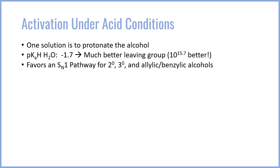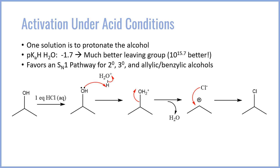This tends to favor an SN1 pathway for secondary, tertiary, and allylic or benzylic alcohols — situations where you would form a moderately stable cation. For example, consider isopropanol reacted with one equivalent of HCl in aqueous conditions. The OH lone pair steals a proton from the hydronium ion, giving OH2+, which is now a very good activated leaving group. The bond then spontaneously ruptures to give the isopropyl cation, and chlorine attacks that cation in an SN1 process to give isopropyl chloride.